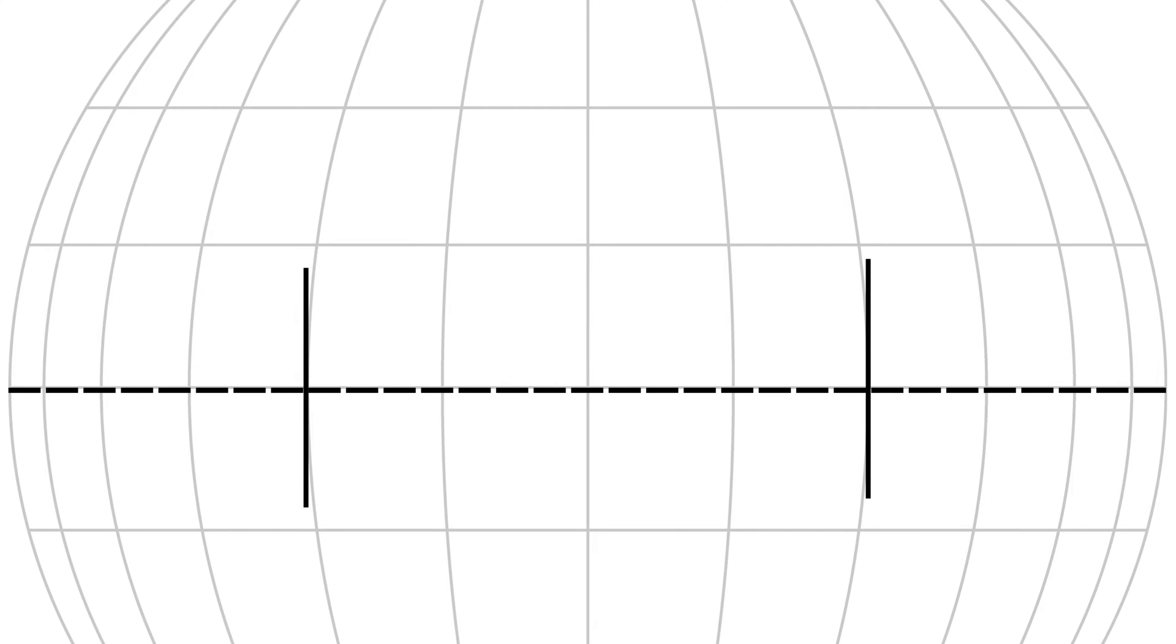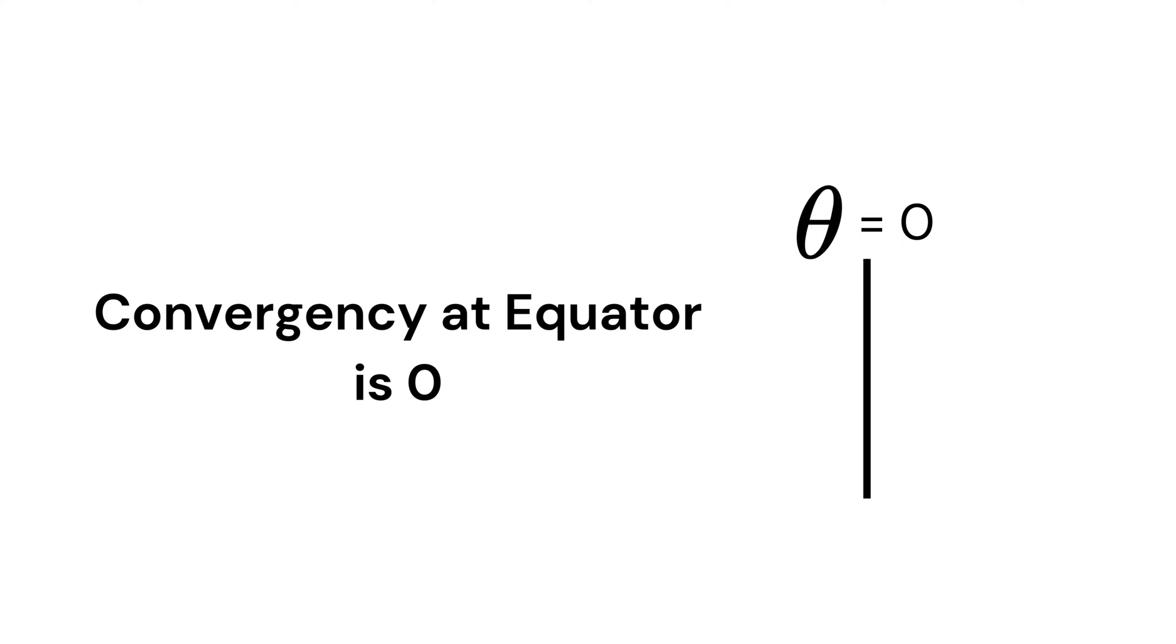If you overlay one meridian on another at this point, they would directly overlap with no angle between them. Therefore, convergency at the equator equals 0 degrees.